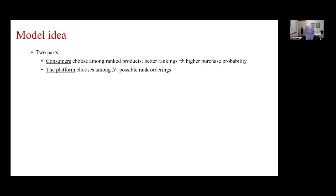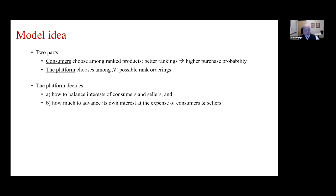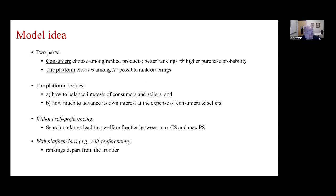The model has two parts. Consumers choose among ranked products; we build in the idea, both plausible and evidence-based, that better rankings give rise to higher purchase probabilities. The platform chooses among N factorial possible rank orderings. Without self-preferencing, search rankings lead to a welfare frontier between maximal consumer surplus and maximal producer surplus — where producers are the third-party sellers. With platform bias, the rankings give rise to a departure from that frontier.